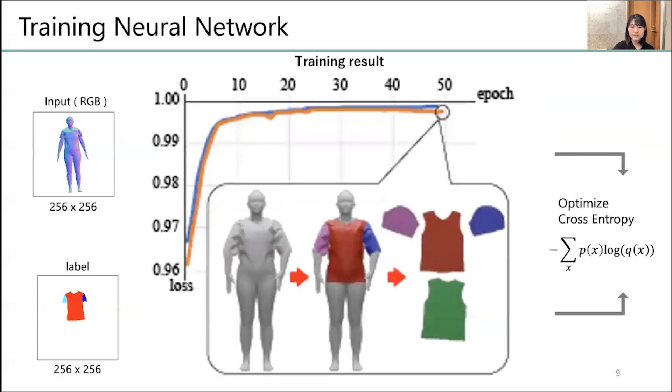This is the convergence of the training, and you can see that it mostly converges in about 30 epochs.